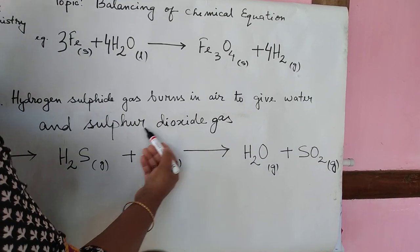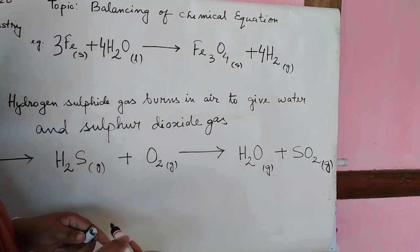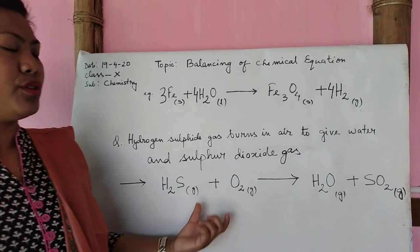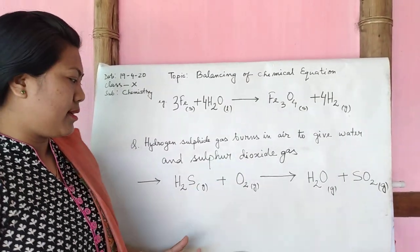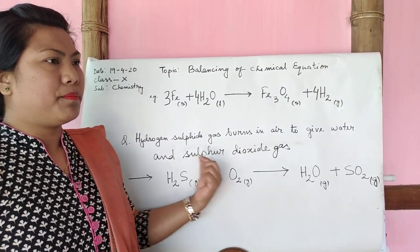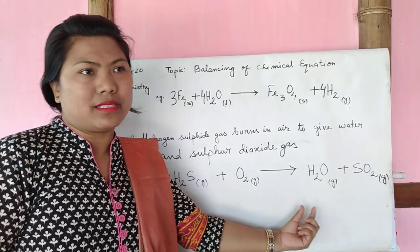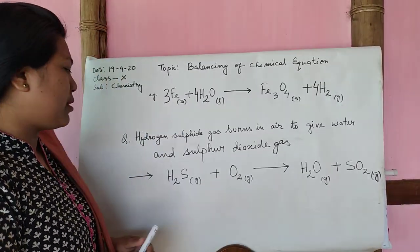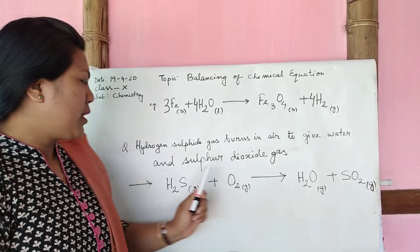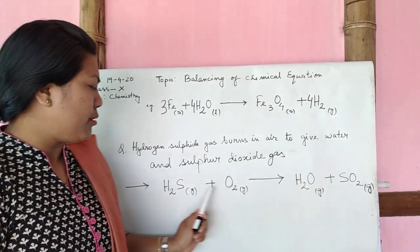Sulfur dioxide gas, SO₂, is already mentioned. Now after writing the chemical equation you need to balance it. Check the number of atoms on the reactant side and the product side. Checking: hydrogen — two and two; sulfur — one and one; then oxygen...